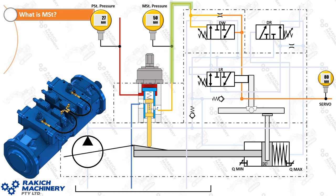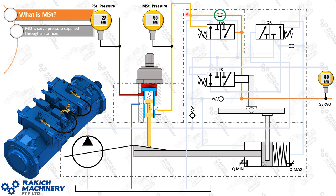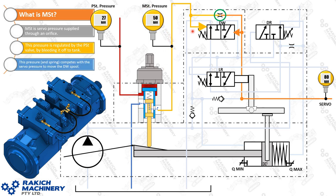What is MST? MST is the gallery on the outside of the pump that goes from the DW valve across to the PST valve — these hoses on the actual pump. It's just an 80 bar servo pressure which is supplied via an orifice, regulated by the PST valve. As that valve opens and closes, this pressure will rise and fall — as it closes off, that pressure will increase. Its main duty is to act with spring tension on the DW valve, competing with the 80 bar servo on the other side of the valve to either move it left or right.